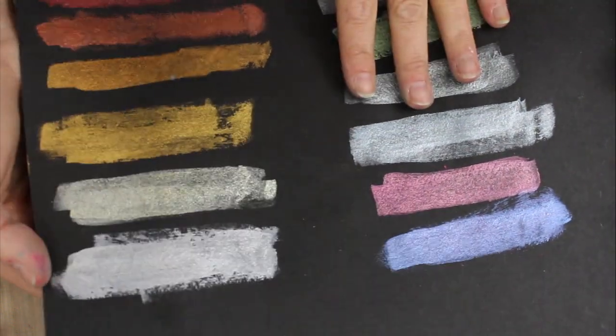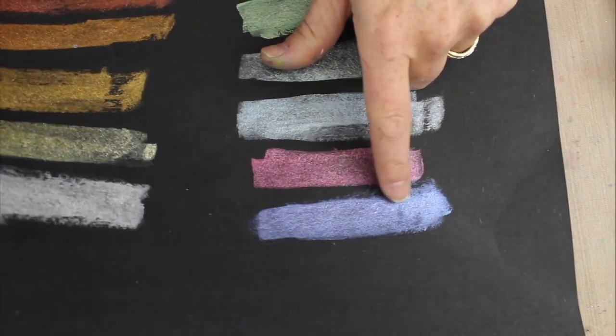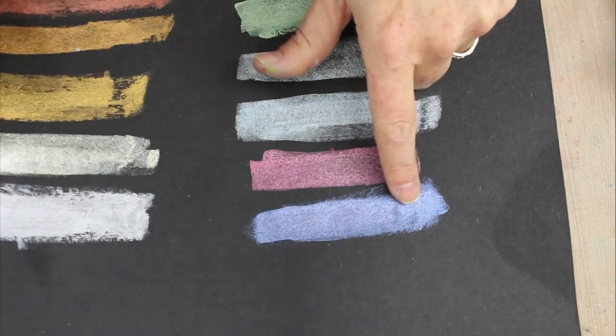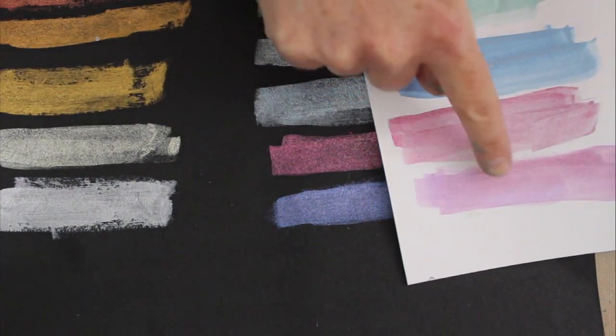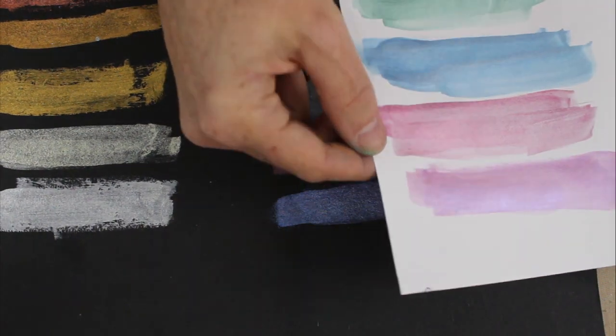As you can see by the brush strokes, I did apply it to dry paper and I think it's absolutely magnificent. The purple looks a little more bluish-purple on black, whereas on the white paper it looks like a lavender.